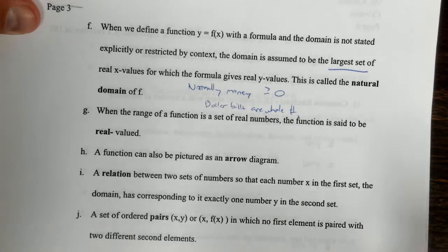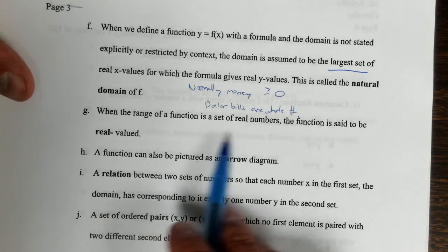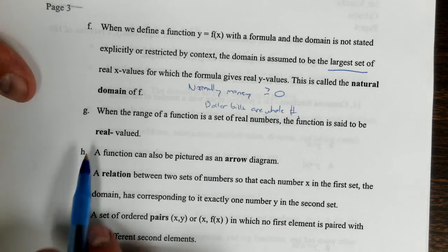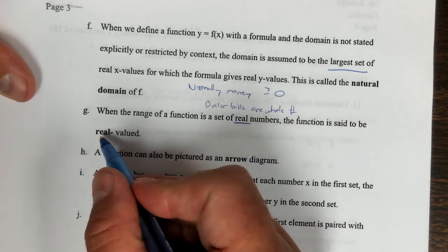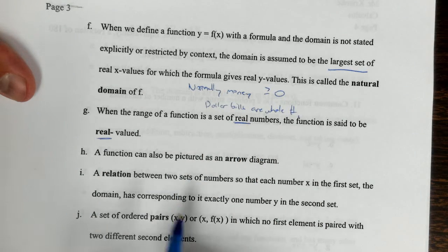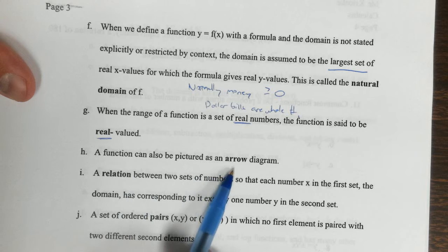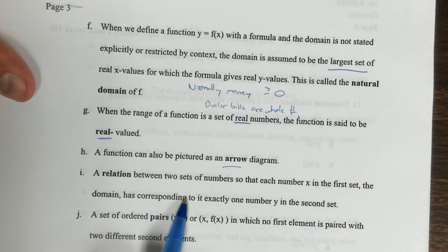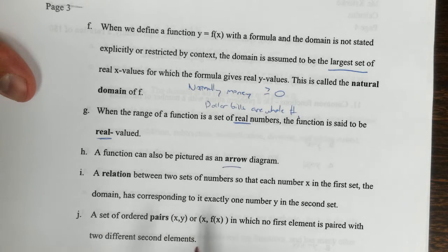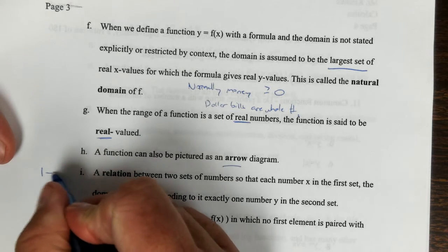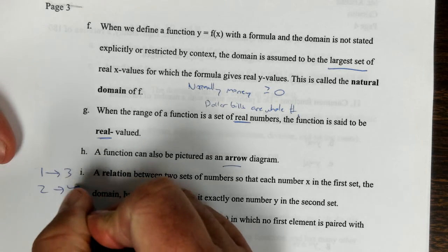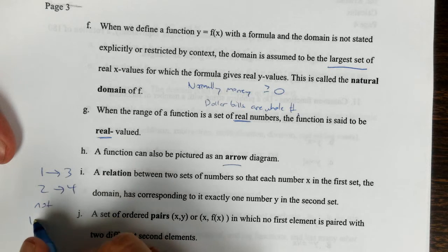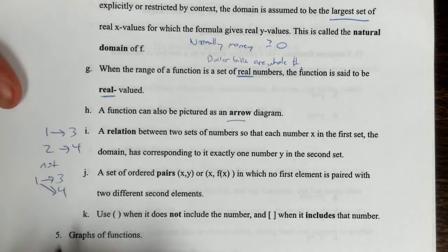When we define a function y equals f of x with a formula and the domain is not stated explicitly or restricted by context, then we assume it's the largest set, and that's going to be called the natural domain. For example, just in everyday life, we don't usually talk about negative money unless you're talking about a checking account where maybe they let you go negative $500. Normally we would think money is greater than or equal to zero. When the range of a function is a set of real numbers, the function is said to be real valued because it's real numbers.